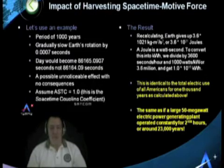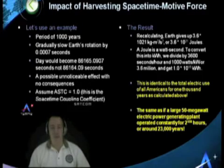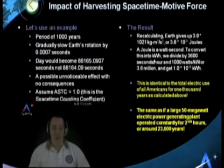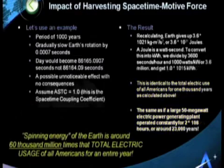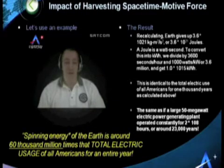In a different perspective, it's the same as if you had a large 50-megawatt electric power generating plant operating continually for 2 to the 108th power hours — roughly 23,000 years. That's an amazing amount of energy harvested just by a simple slowing of the Earth's rotation. The total spinning energy of the Earth is roughly 60,000 million times the total electric usage of Americans for the year. So this is certainly a viable solution.